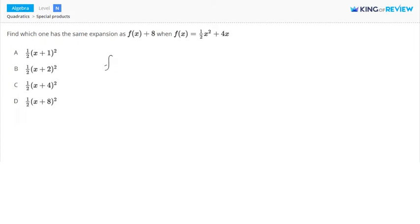Alright, so let's write it down. f of x plus 8, and we know that f of x is equal to this, so replace that. 1 half x squared plus 4x plus 8.